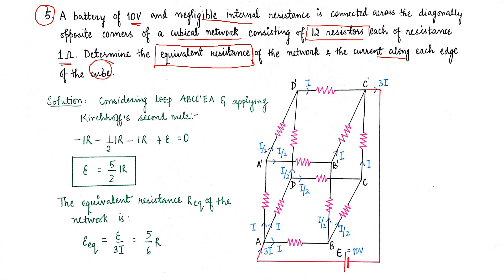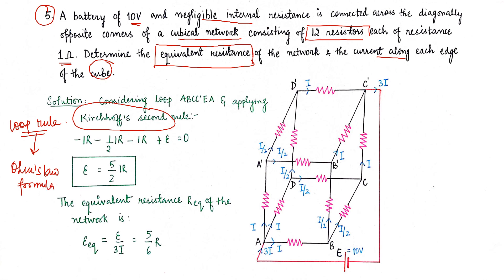To solve this, we have to use Kirchhoff's second rule, which is the loop rule. Once we apply the loop rule, we will then use Ohm's law for further clarification to find the current and equivalent resistance. Why are we not using parallel and series combination formulas? Just see this diagram.